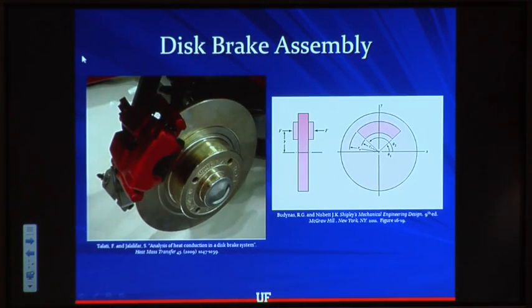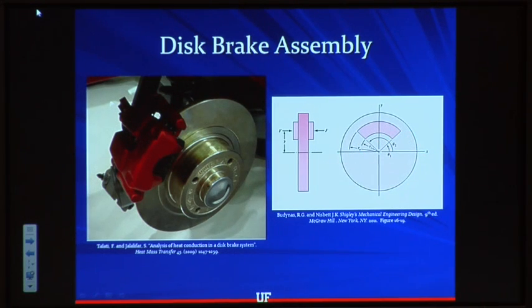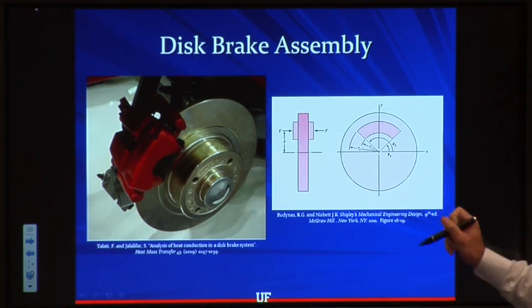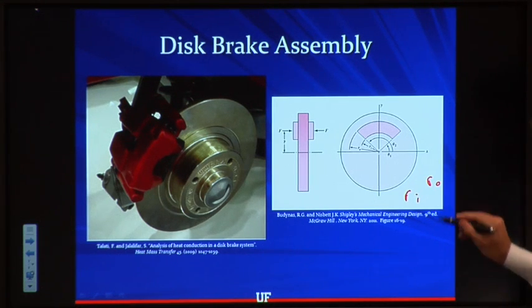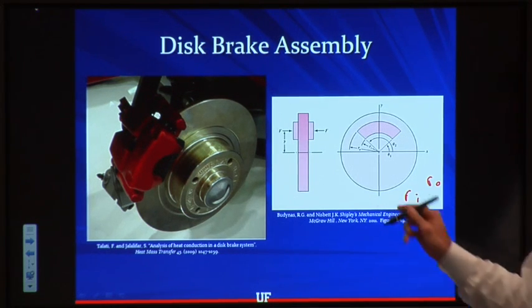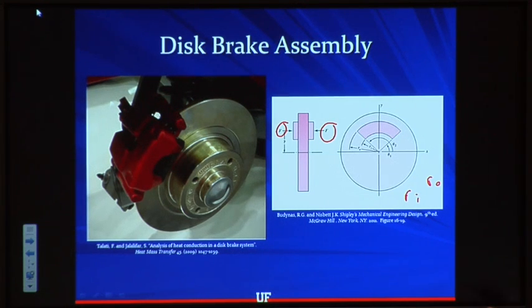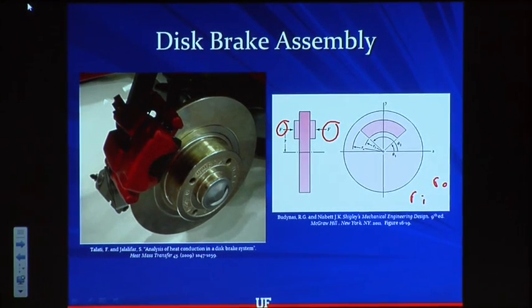Let's discuss an idealized brake assembly where we have just a rotating disc and a couple of annular sections, one on either side, that represent our brake pads. The disc radius is given by capital R. The two annular sections have an inner and outer radius given by R_I and R_O respectively. These pads are pressed up against the rotating disc with some force F on both sides, and F times the area gives the pressure at which those pads are pressed up against the disc.